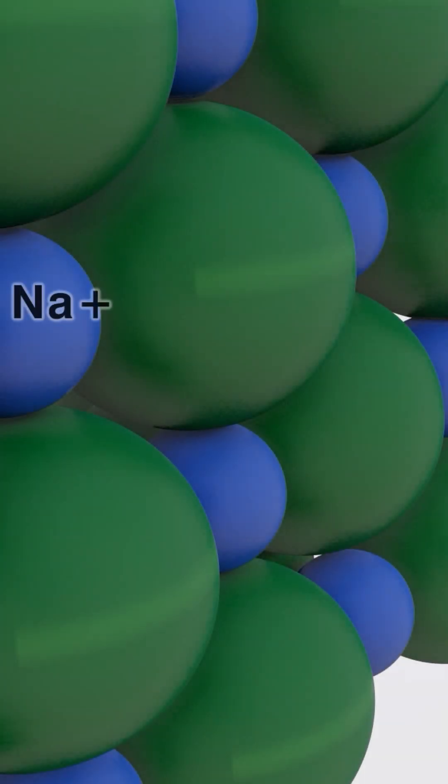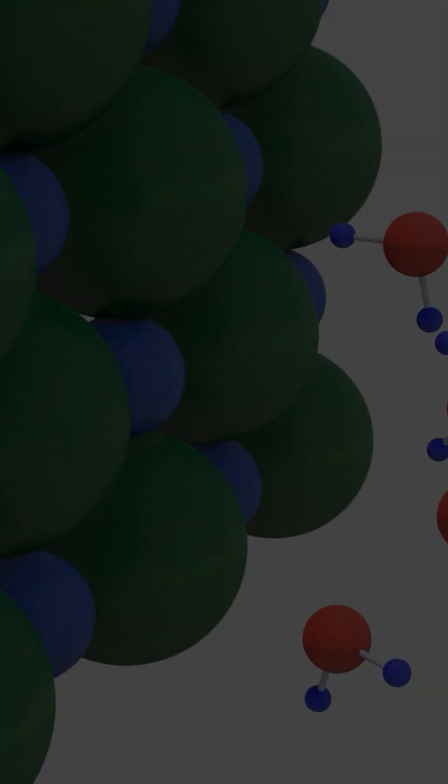These elements are sodium, which is positively charged, and chloride, which is negatively charged. Because these elements have a charge, they are referred to as ions instead of atoms.